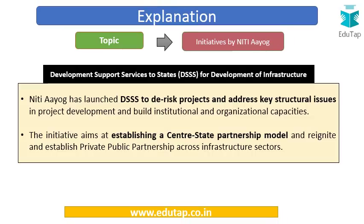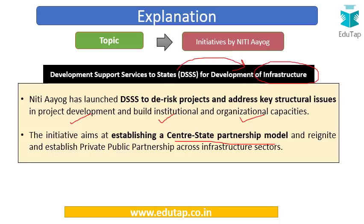The Development Support Services to States (DSSS) was launched to de-risk infrastructure projects and address key structural issues in project development and build institutional capacities. When states take up large infrastructure projects, significant risk is involved. DSSS addresses this by establishing a centre-state partnership model where both centre and state collaborate to share risk, reigniting public-private partnerships across infrastructure sectors.